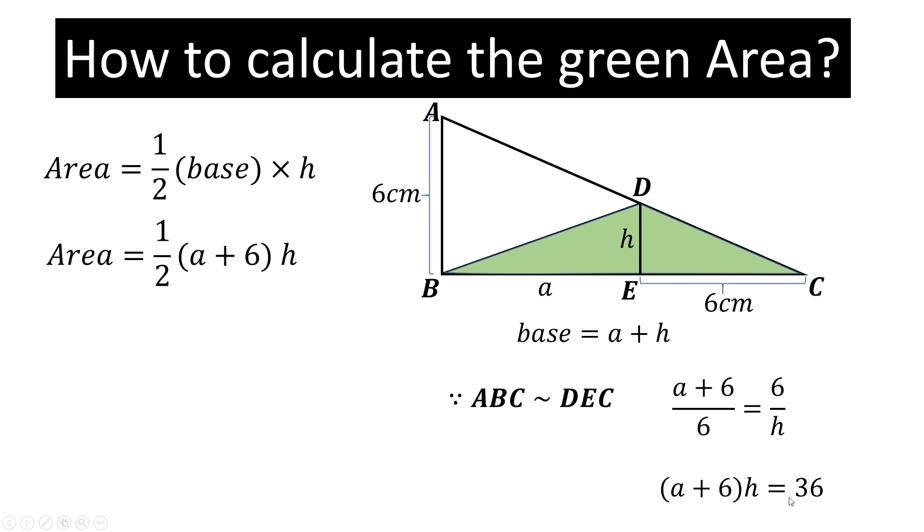(a + 6) times h is equal to 36. We will put this value here and we will get this. Now simplify this and we will get 18. So the required green area is equal to 18 centimeter square.